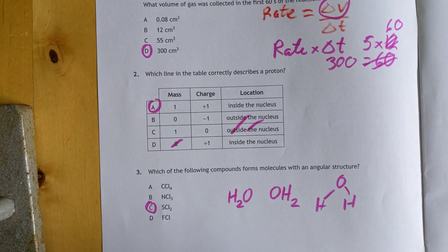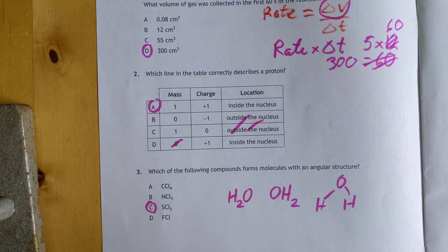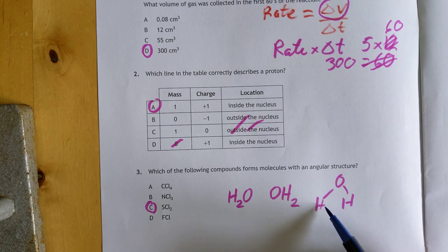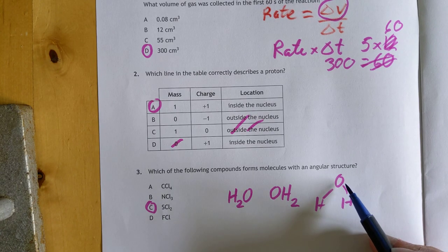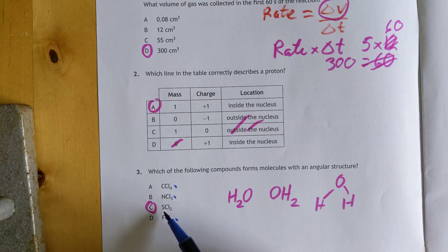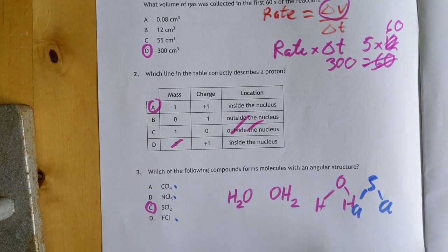Which of the following components has angular structure? That is your classic angular structure of water. We're looking for this sort of shape here. You can only have an angular structure if you've got two things attached to a center atom. This is a little bit sneaky, but sulfur and two chlorines is going to be the same structure as water.